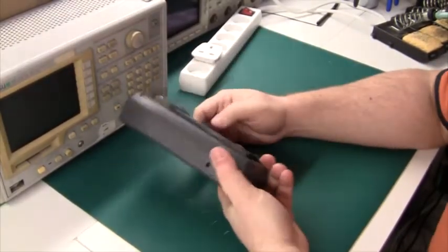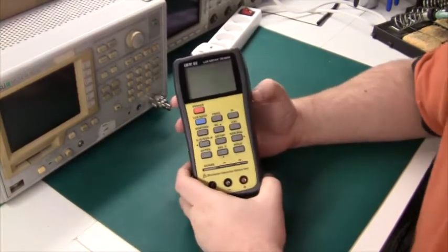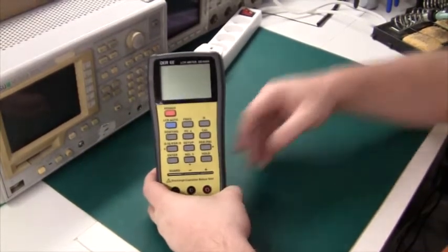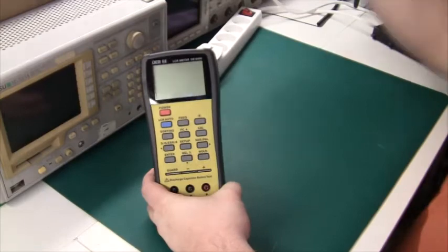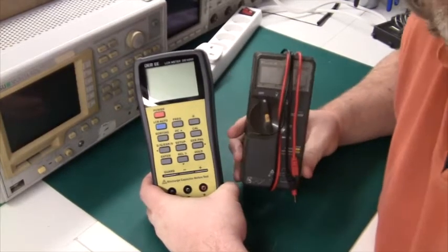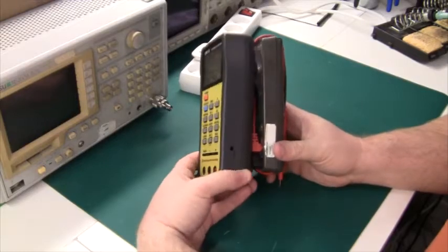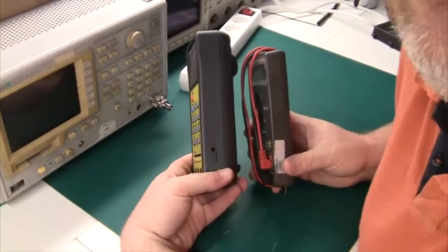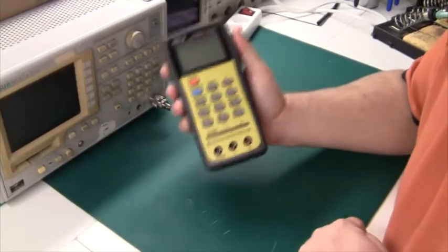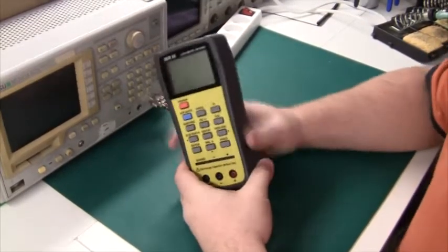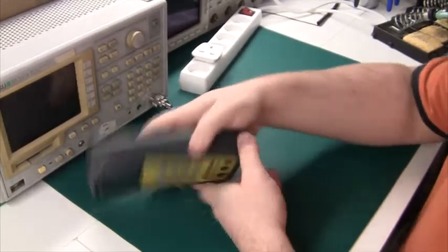But unfortunately it's also very bulky. If you compare it to let's say a Fluke 70, you can see how much bigger it is and it's really thick as well, which is probably the biggest problem because it really doesn't fit very well in your hand.